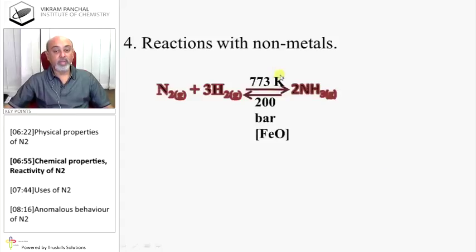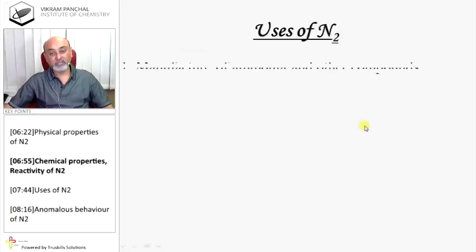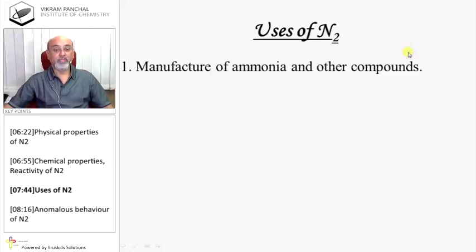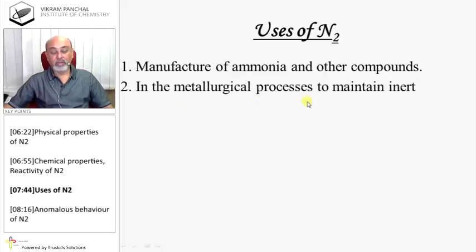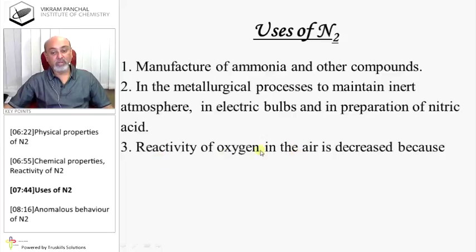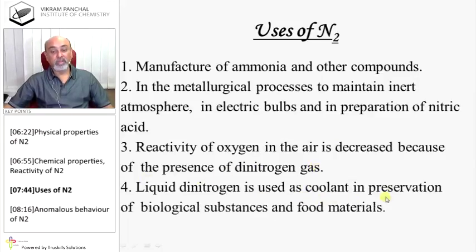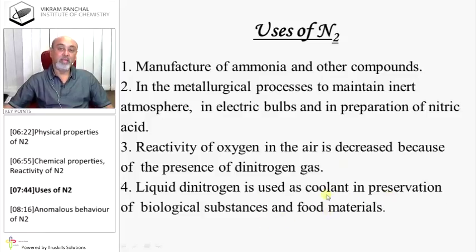Reactions with non-metals: With hydrogen it gives ammonia via Haber process. With oxygen on heating gives nitric oxide. Uses of nitrogen: Manufacturing of ammonia and other compounds, in metallurgical processes to maintain inert atmosphere, in electric bulbs, and in preparation of nitric acid. Reactivity of oxygen in air is decreased because of the presence of dinitrogen gas. Liquid nitrogen is used as coolant in preservation of biological substances and food materials.